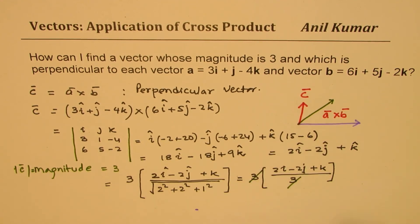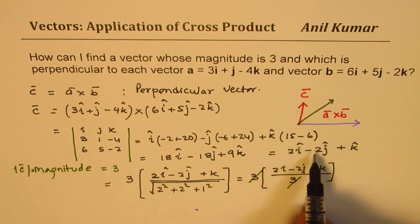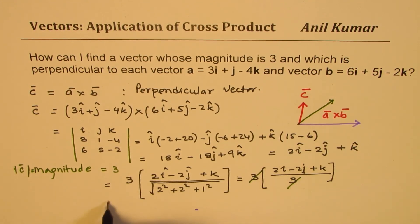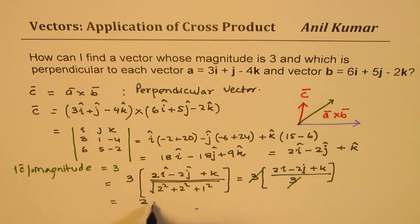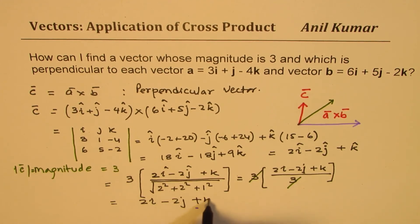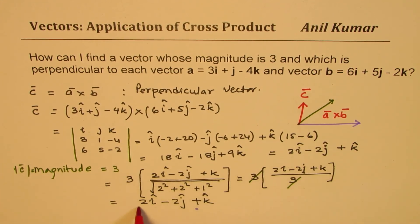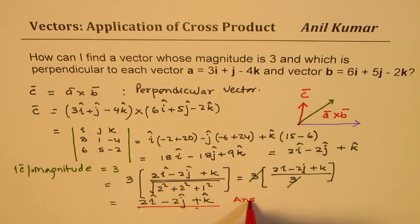The vector we got, 2i − 2j + k, already has a magnitude of 3, so the 3s cancel. We get our answer as 2i − 2j + k. That becomes our answer. Is that clear? That is how we can actually solve it. Thanks and all the best.